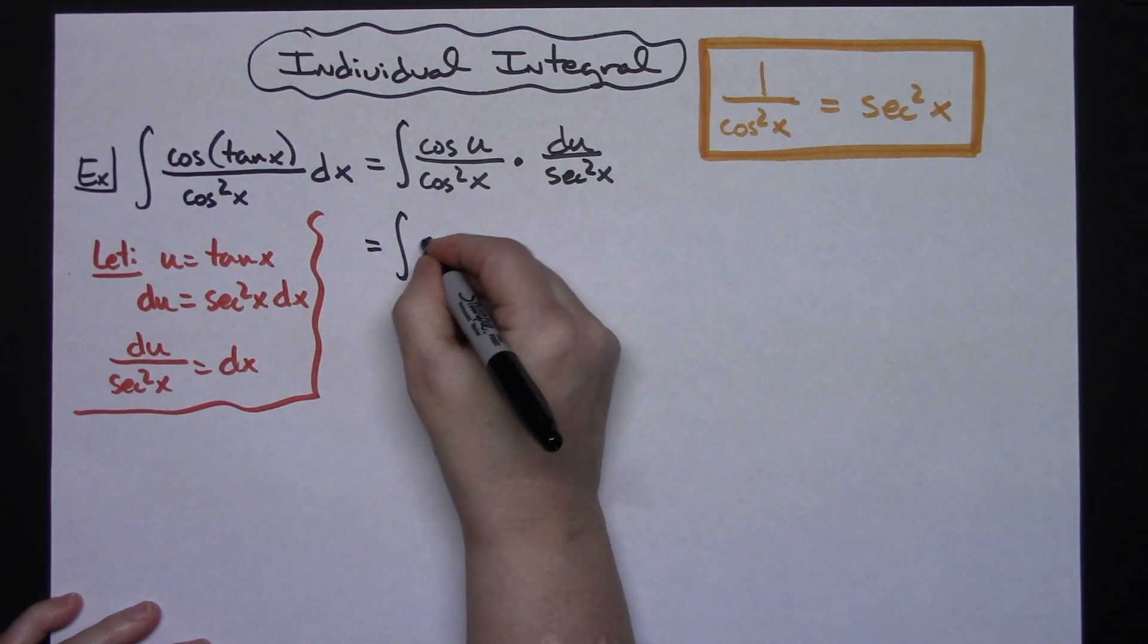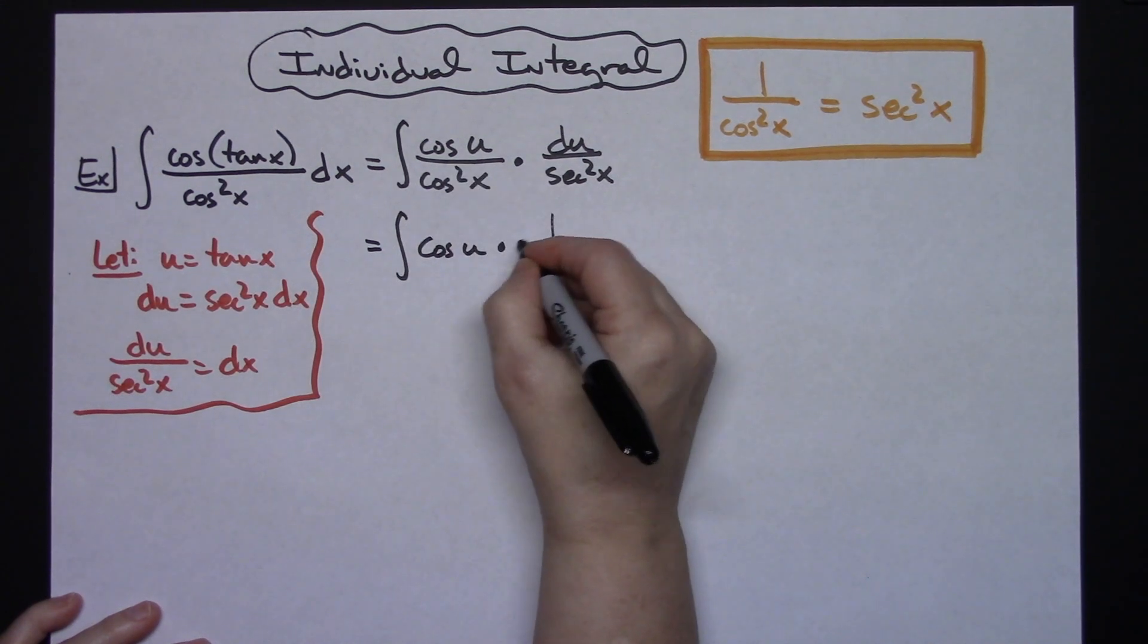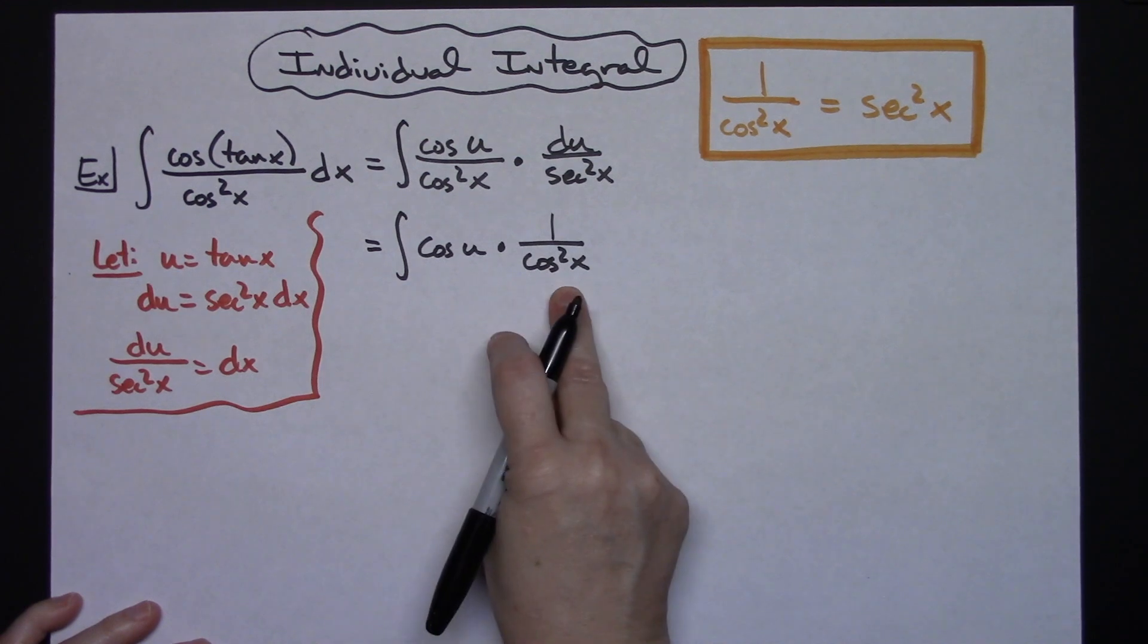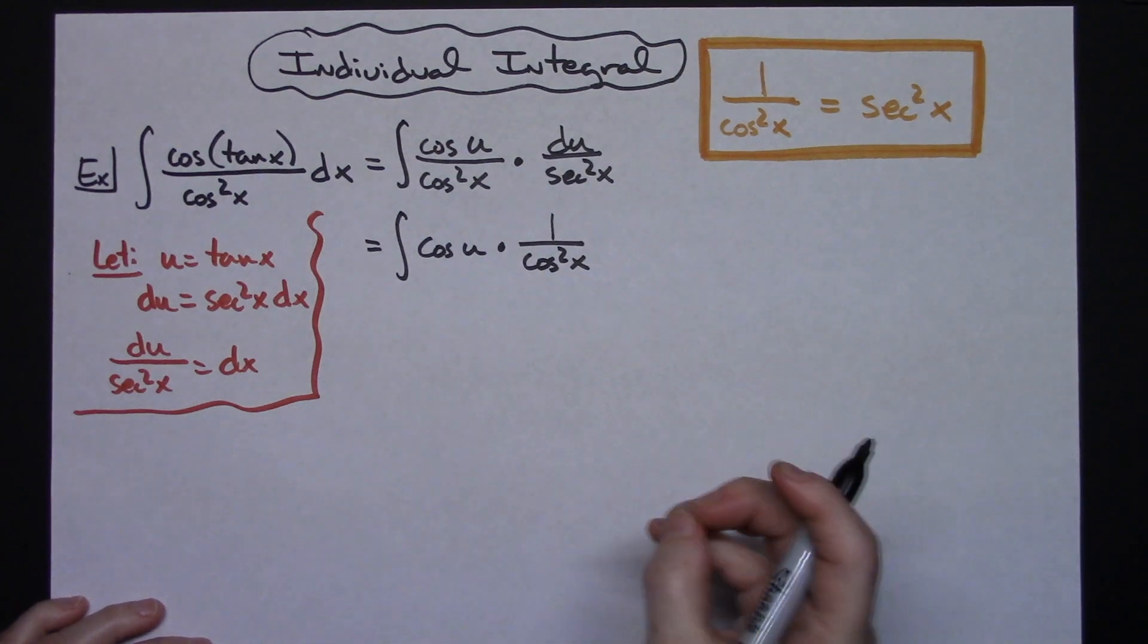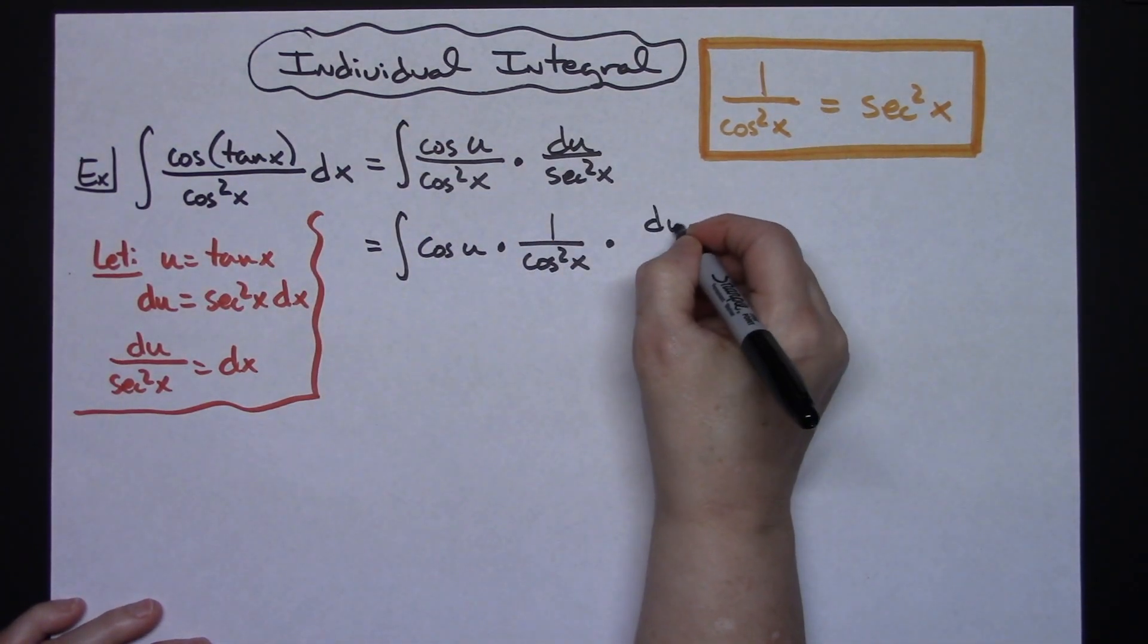If I multiply those two things, I have that expression right there. Separating it out helps if you're struggling a little bit. I'm going to keep that du over secant squared x. Now hopefully you can see there is my 1 over cosine squared x.